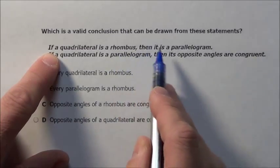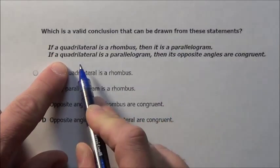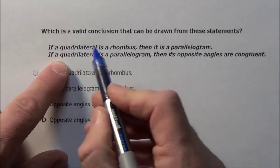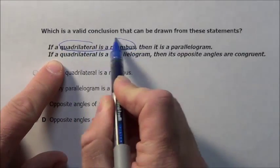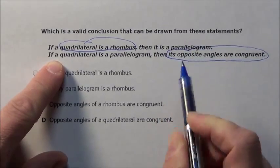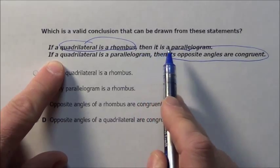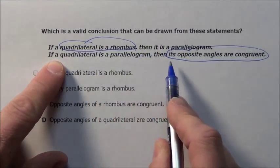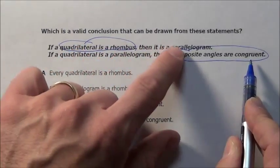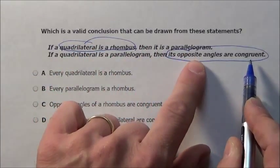We have: the quadrilateral is a rhombus, that means the quadrilateral is a parallelogram. But if it's a parallelogram, its opposite angles are congruent. So if a quadrilateral is a rhombus, we can conclude its opposite angles are congruent — because this first statement proves that, and then the second proves that, so together they prove the final statement.